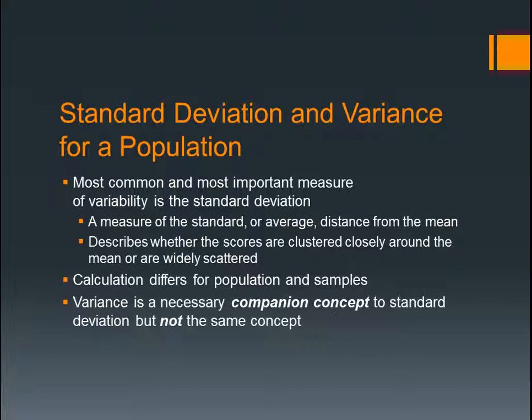Standard deviation and variance for a population. The most common and most important measure of variability is the standard deviation. It is a measure of the standard or average distance from the mean. Deviation is how far away or how different they are. It describes whether the scores are clustered closely around the mean or are widely scattered. The calculation is different depending on if you have a population or a sample. And variance is a necessary companion concept to standard deviation, but it is not the same — so they are different. You'll have to remember these two; they are very important for your success in statistics.